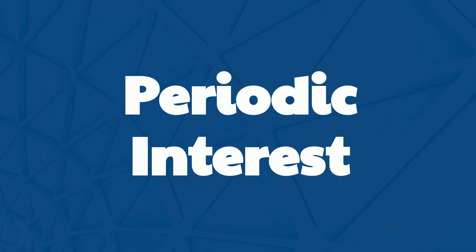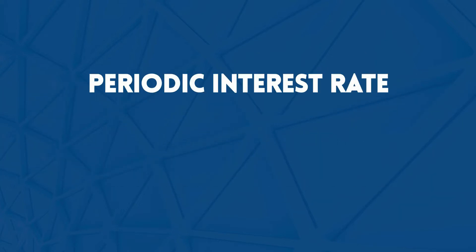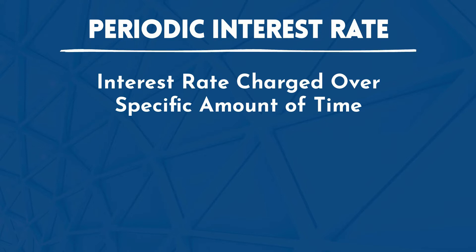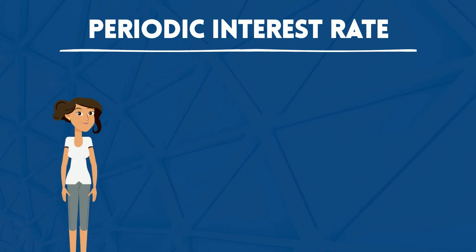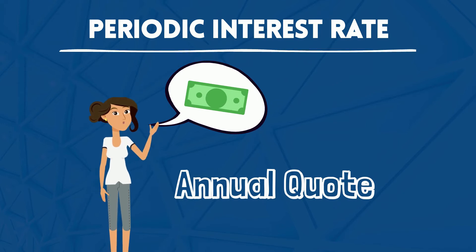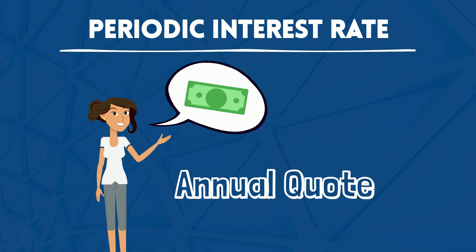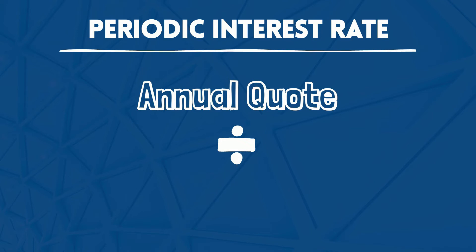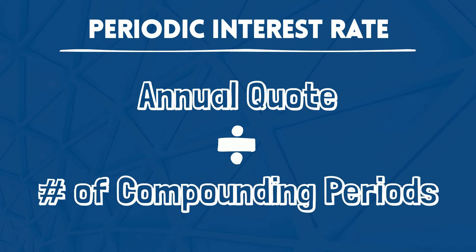Periodic interest. A periodic interest rate is the interest rate charged on a loan over a specific period of time. Lenders quote interest rates on an annual basis, but in most cases the interest compounds more frequently than annually. As a result, the periodic interest rate is the annual interest rate divided by the number of compounding periods.